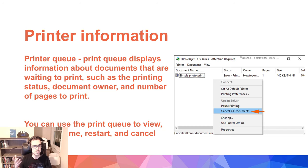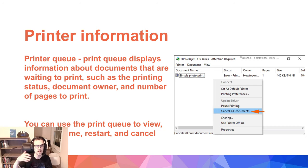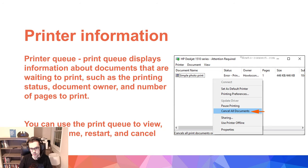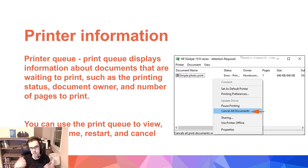A printer queue is what happens every time you print something — it basically goes to this list, or queue. If you print multiple documents, they sit in this queue because the printer only has so much memory, so it sends documents one at a time to the printer. The printer can store a couple at a time, but after a while it just sits in the queue and sends them one by one. Once it sends a document, the printer stores it in memory and prints it out.